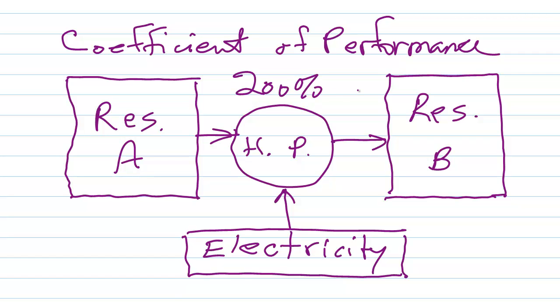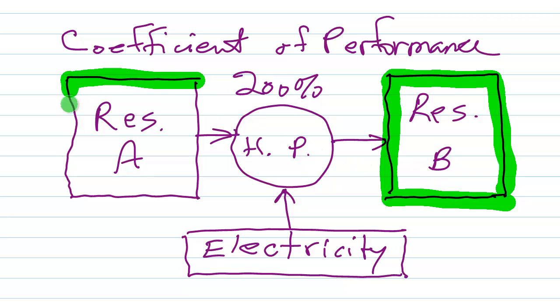And what does that mean? Well what a heat pump will actually do in the usual case, let's just suppose that reservoir B is your house and it's cold outside. But you have a ground source heat pump that gets heat energy out of the ground which is maybe in the 50s or so degrees Fahrenheit all the time, and transfers that energy to your house to warm up your house.